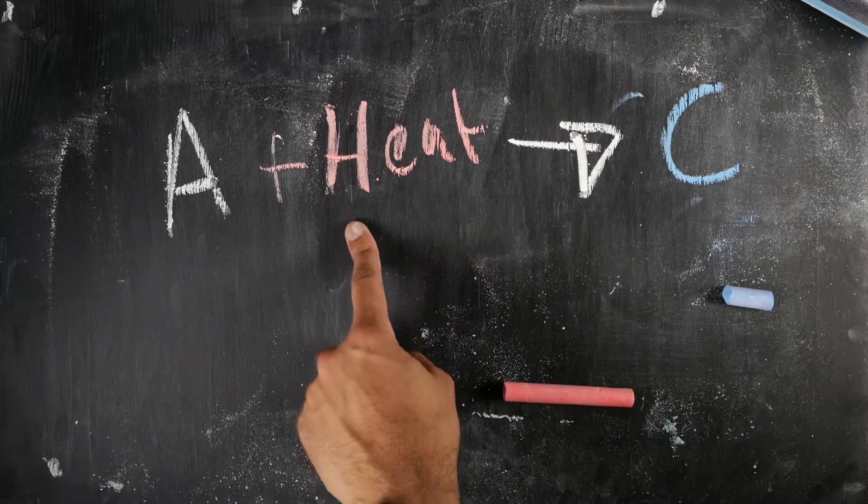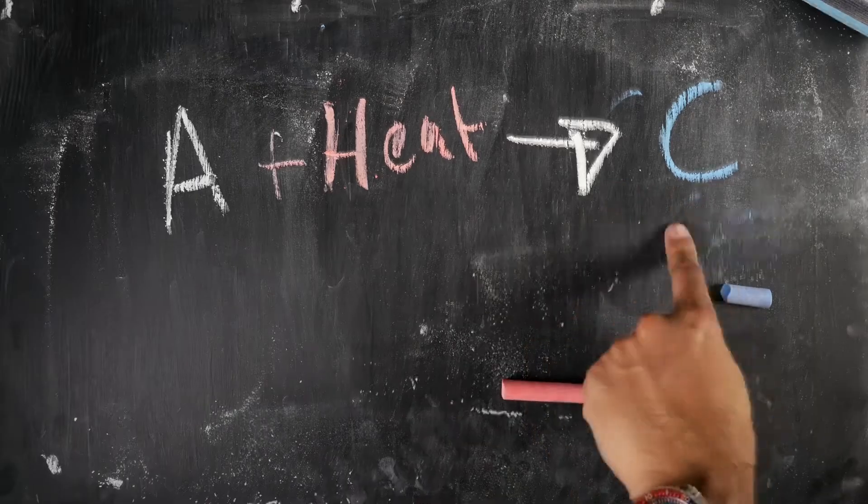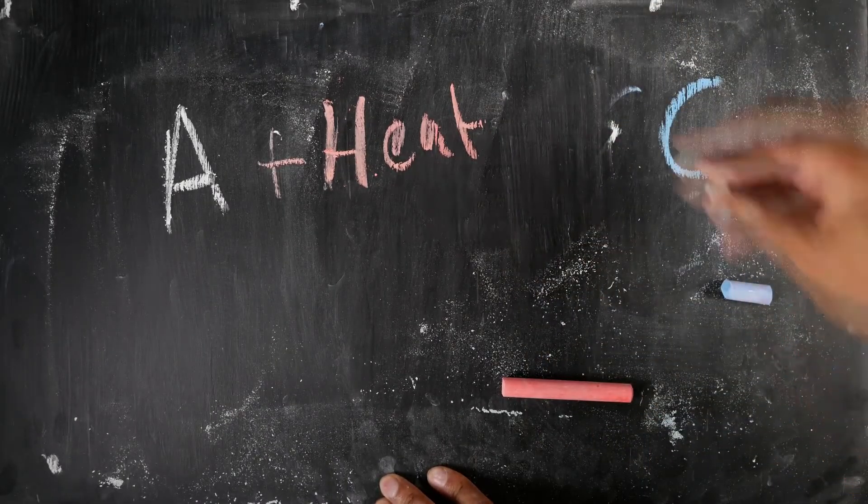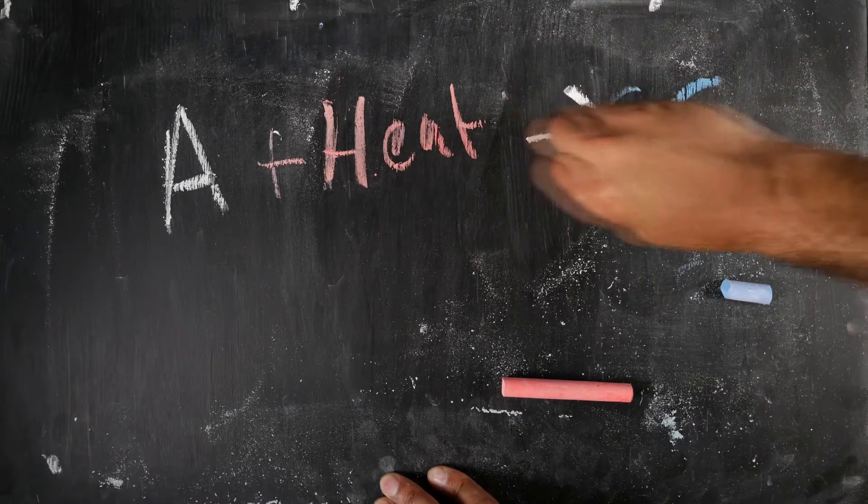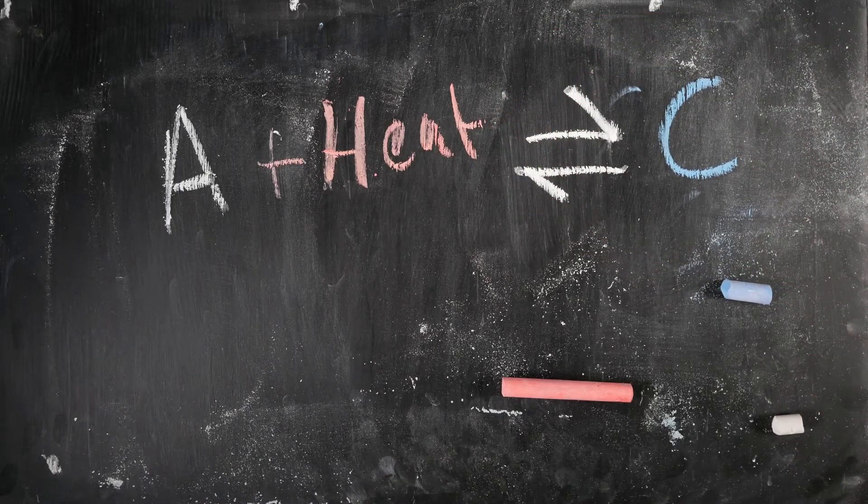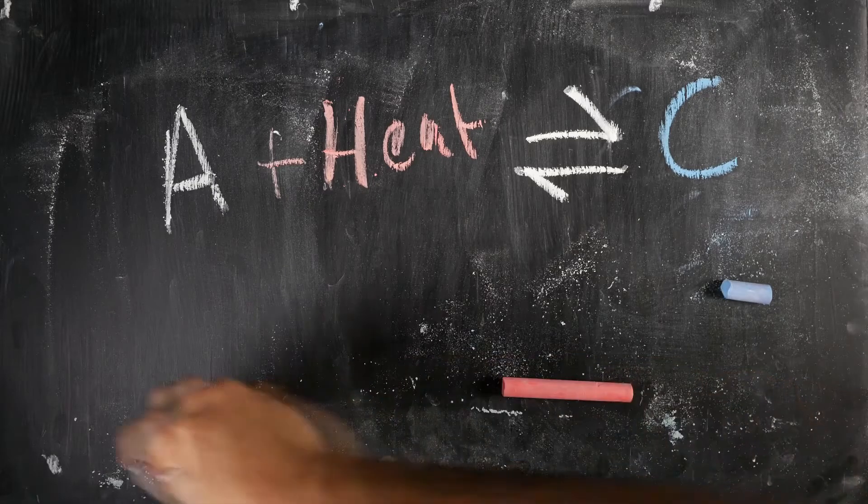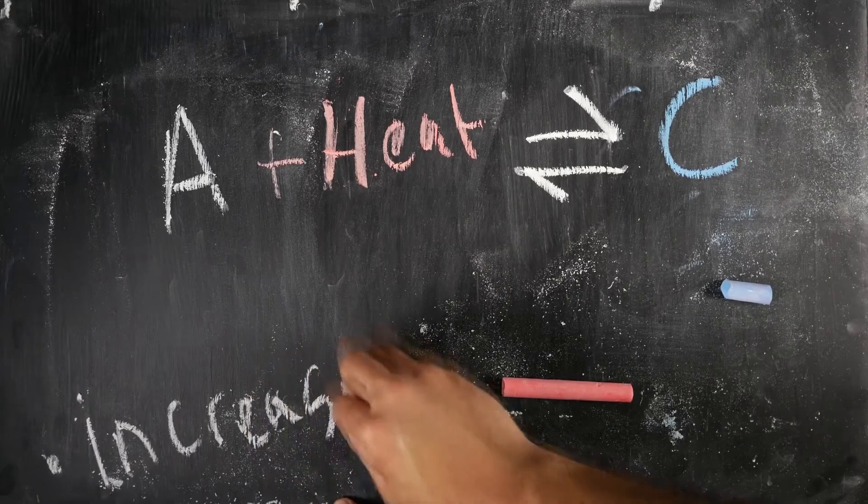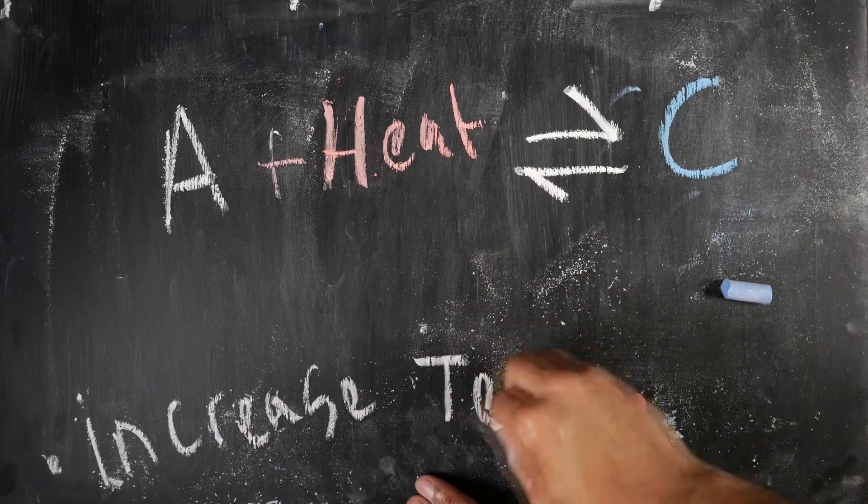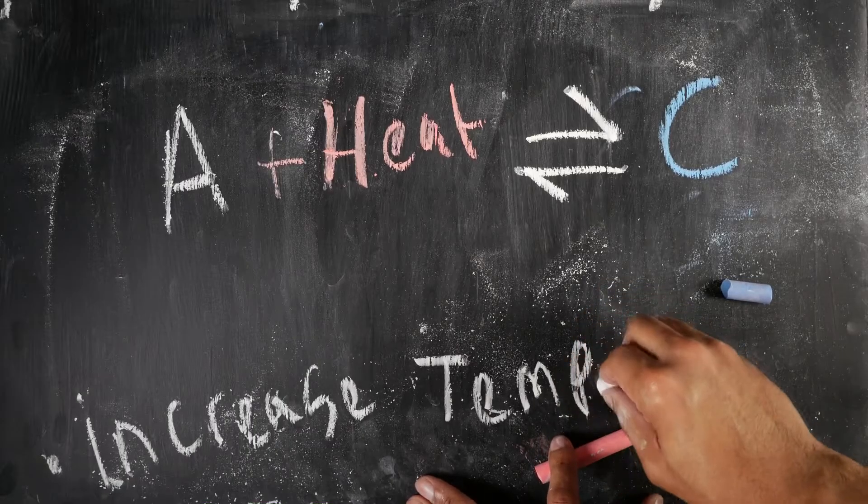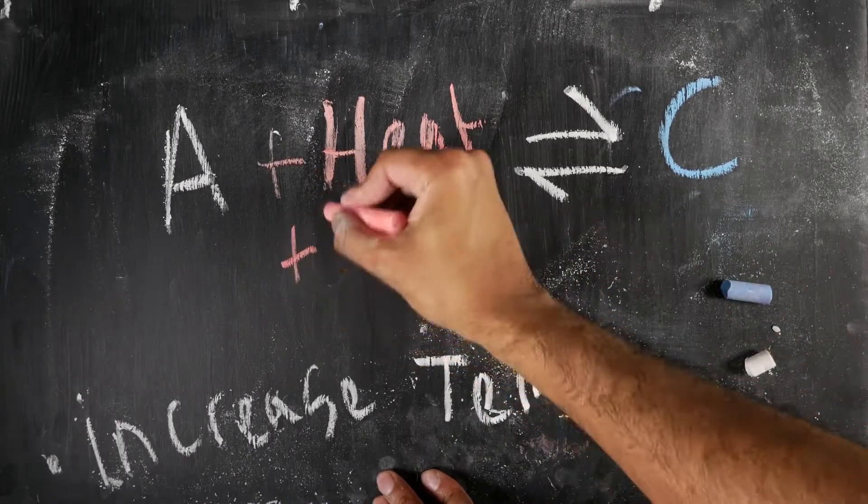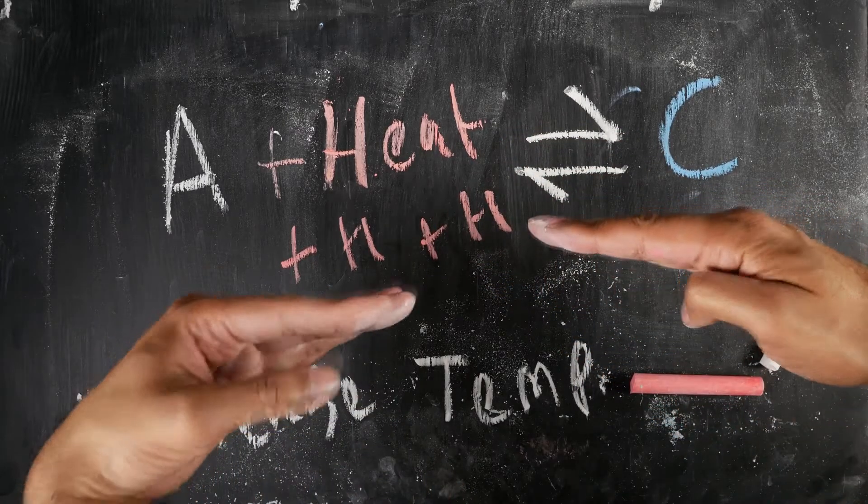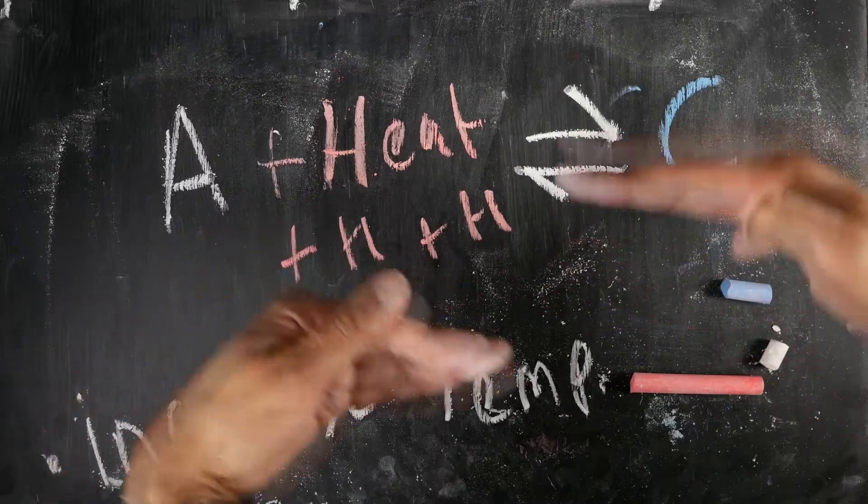Now consider this reaction. This is an endothermic reaction because it's taking up heat. So A plus some heat giving you C. Now of course I've done it wrong because you want to have one of these reversible arrows like that. Okay, now suppose I increase the temperature. What's going to happen? Well, that's the same as giving lots and lots and lots of heat. So again,